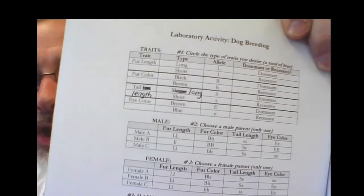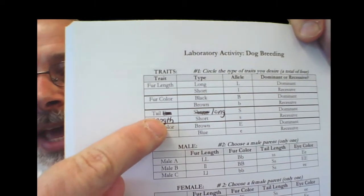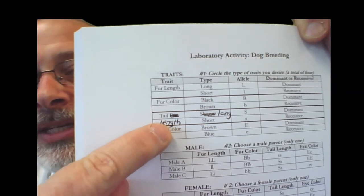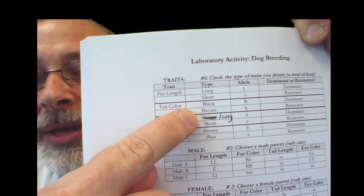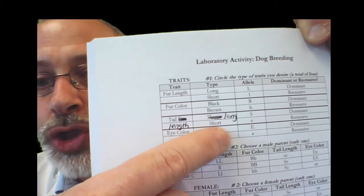On the next page, which is page 186 in your book, I'd like you to make a change first. Under the tail fur, change the fur to length. Make it tail length, and instead of shaggy, make it long. So long or short tail.